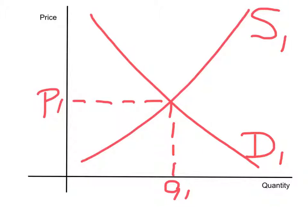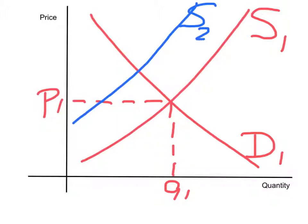Let's look at the first change. The government puts a tax on the production of these cars. Putting a tax on production is a supply determinant, so something is going to happen to the supply. Well, it's more expensive to make these cars due to the tax, so it's going to be less attractive for firms to make them. That is going to shift the supply curve to the left — a decrease in supply. So the new supply curve is S2. If that were the only change, the new equilibrium would show an increase in price and a decrease in equilibrium quantity.